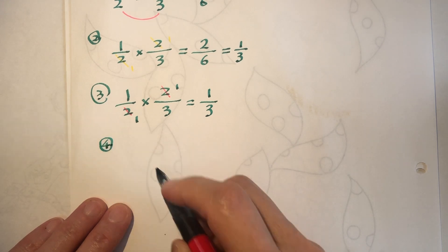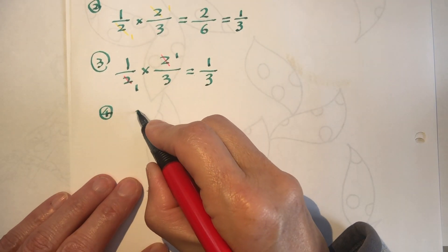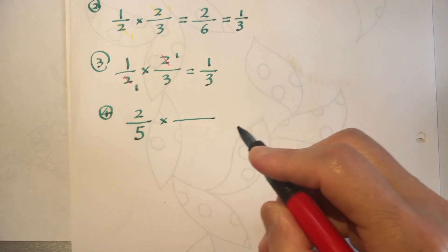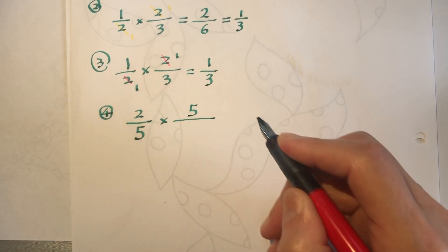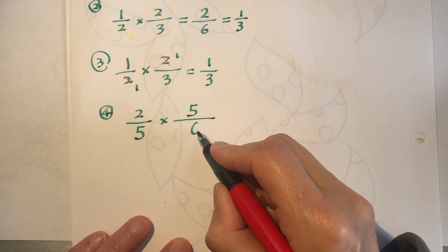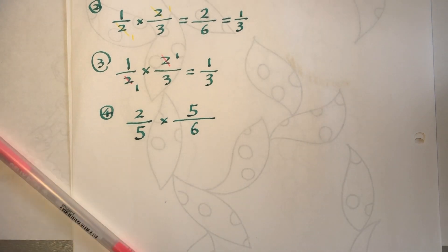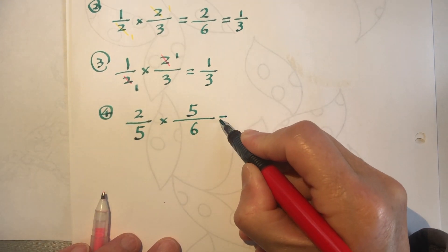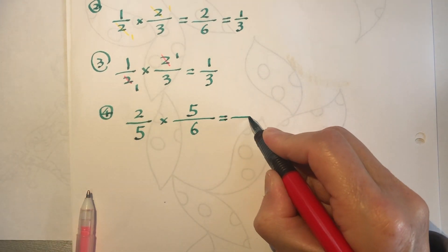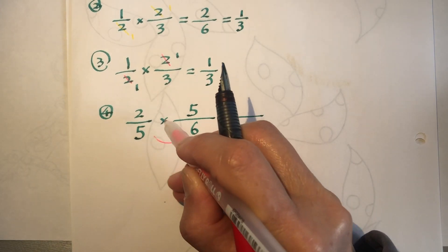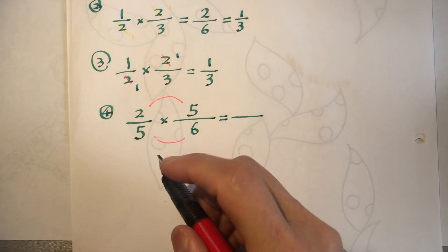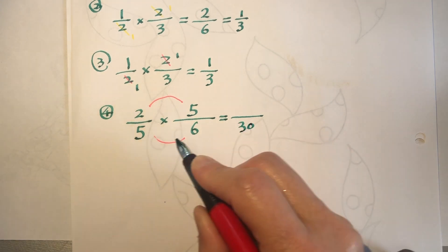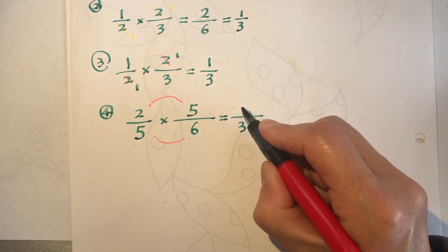Question number 4. This is 2 over 5 times 5 over 6. Okay, so how do we do? We can do as our normal method: bottom times bottom, top times top. 5 times 6 is 30, and the top is 10.